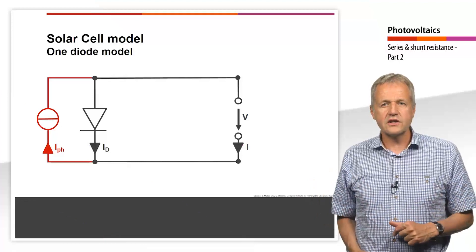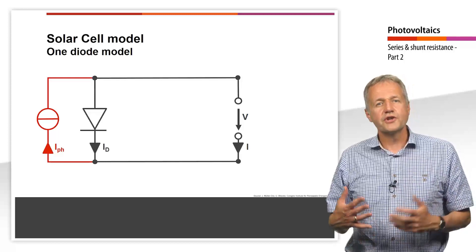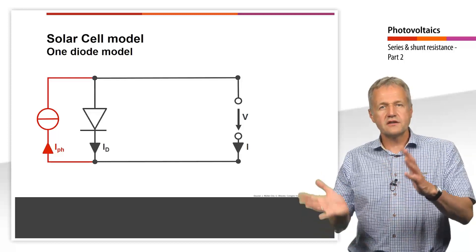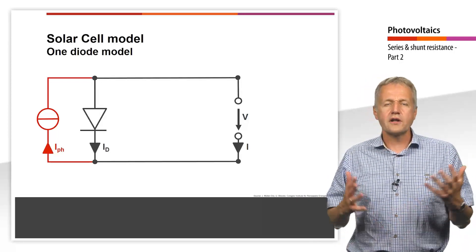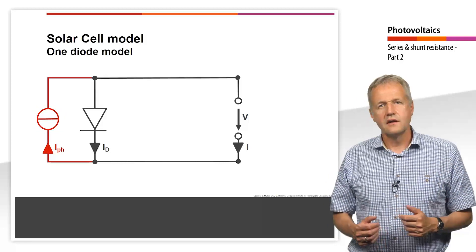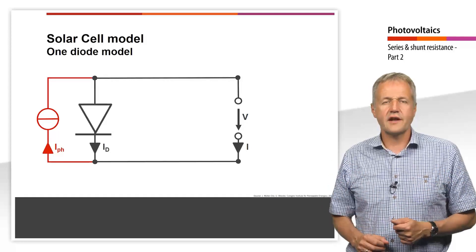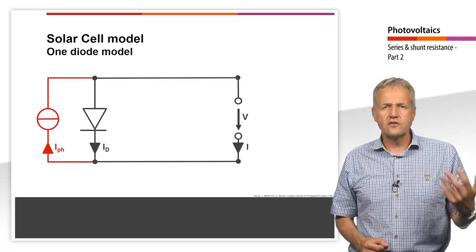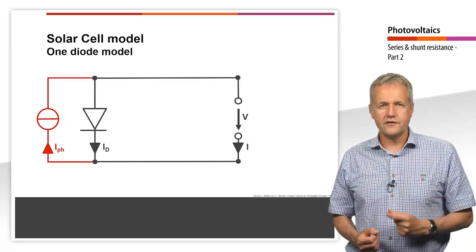In the last teaching unit, we derived a simplified equivalent circuit diagram, which is shown here. The diagram here is rotated with respect to the one shown in the previous teaching unit. We modeled the solar cell as an ideal power source and the electrical behavior of the p-n junction using a diode connected in parallel. Note that we assumed an ideal solar cell, meaning a solar cell without losses.